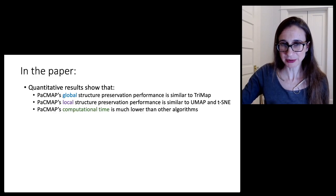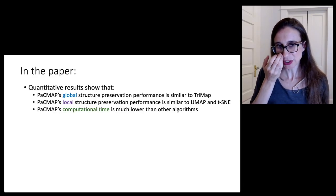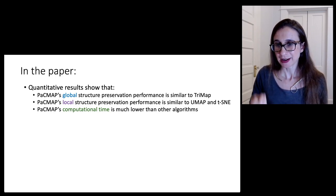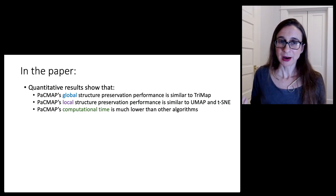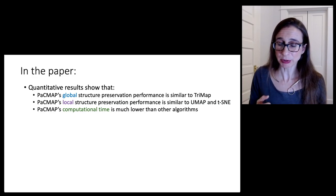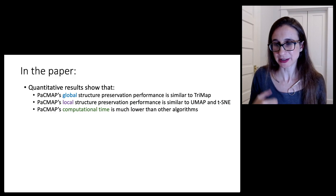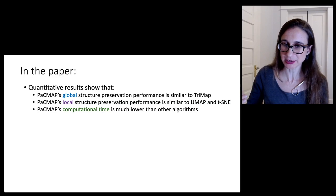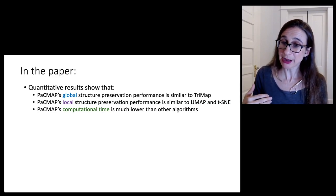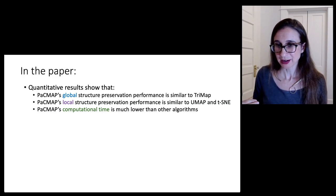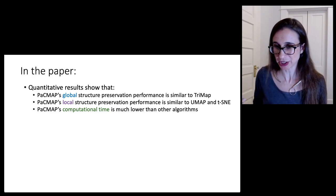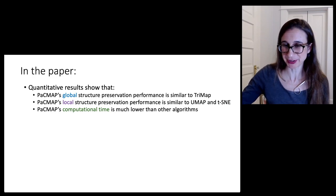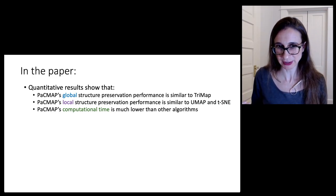In the paper, we have quantitative results that show that PacMap's ability to preserve global structure is similar to that of TriMap. We also show that its local structure preservation performance is similar to that of UMAP and t-SNE. So TriMap is the best alternative to us in terms of global structure, and UMAP and t-SNE are the best alternative to PacMap in terms of local structure. And so we're on par with both TriMap's global structure preservation and UMAP and t-SNE's local structure preservation.